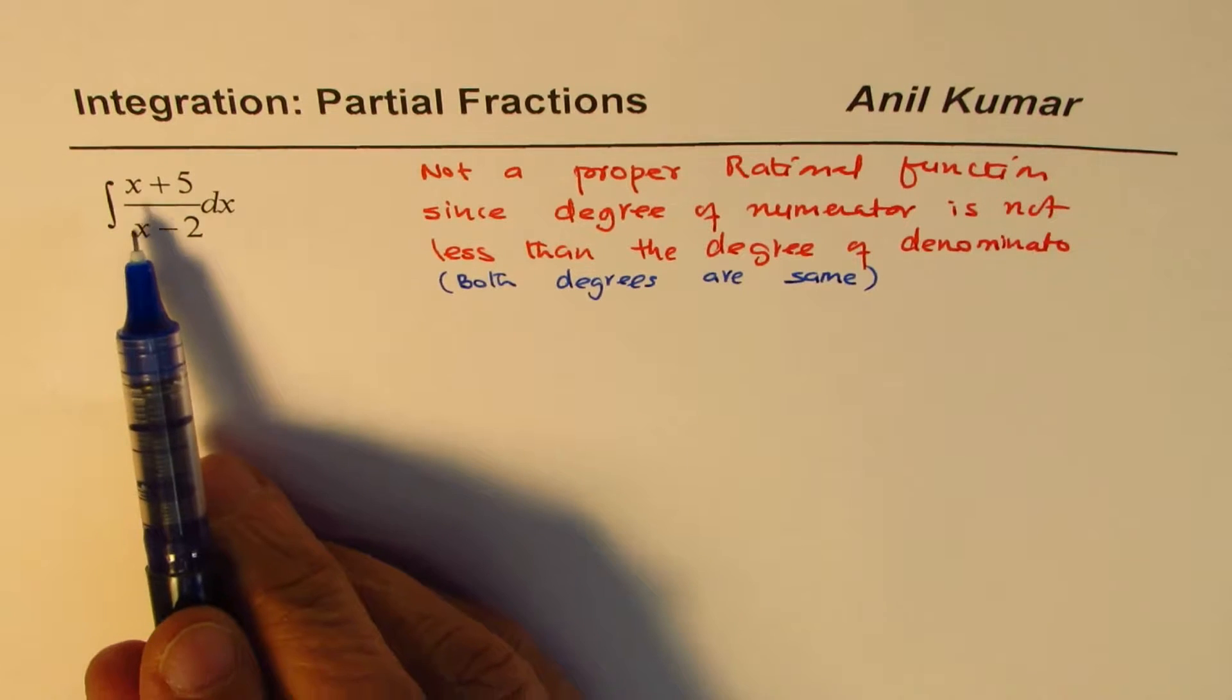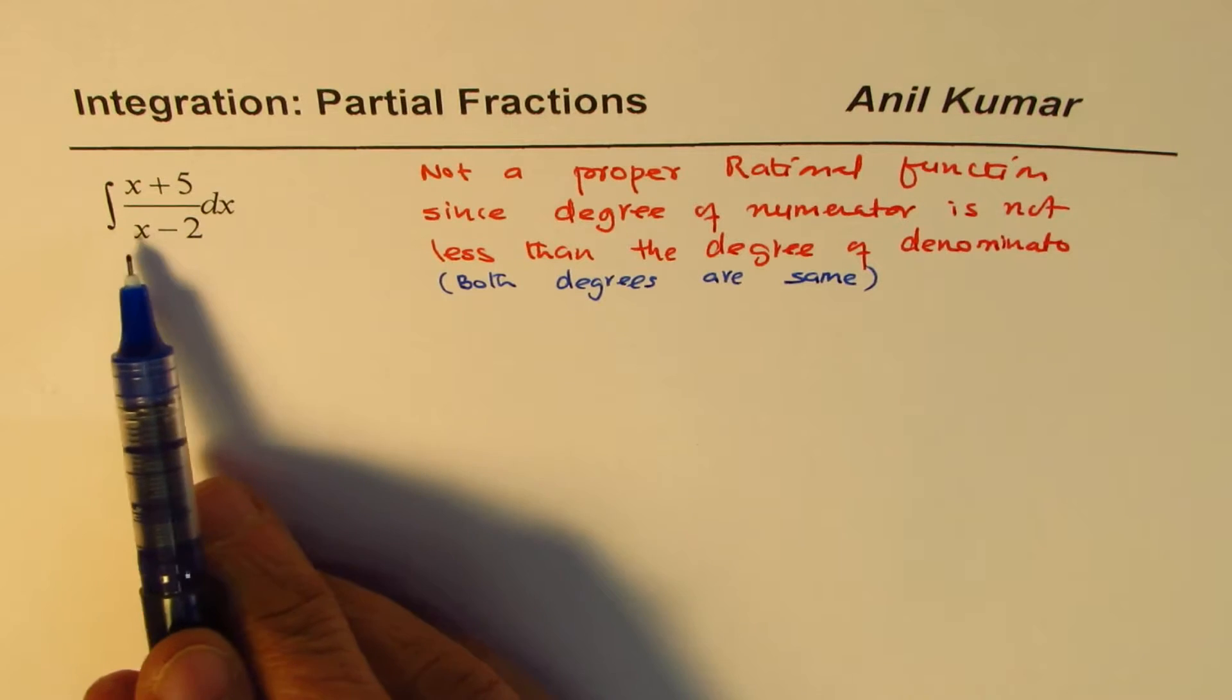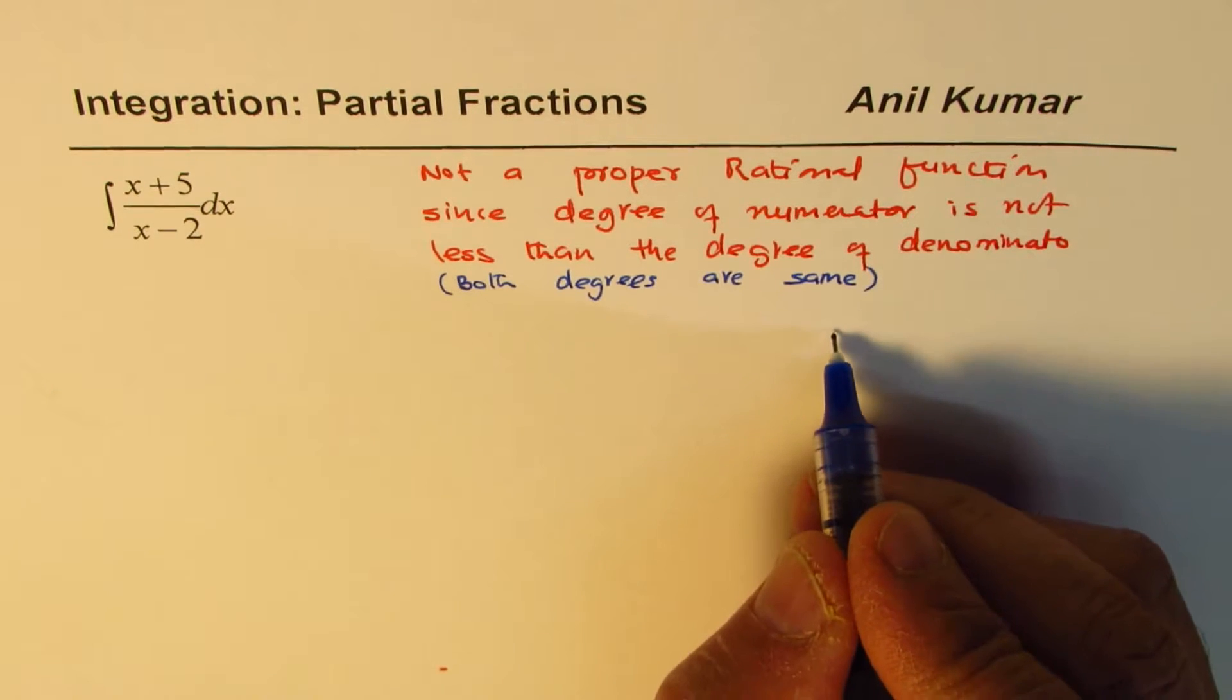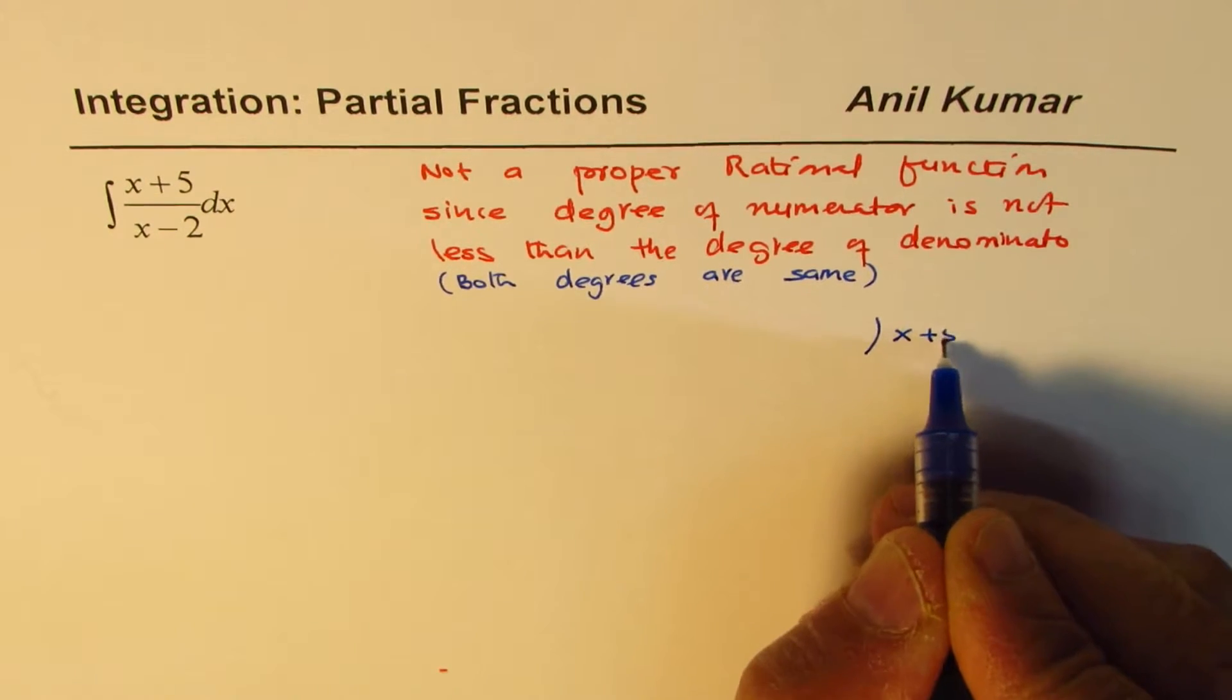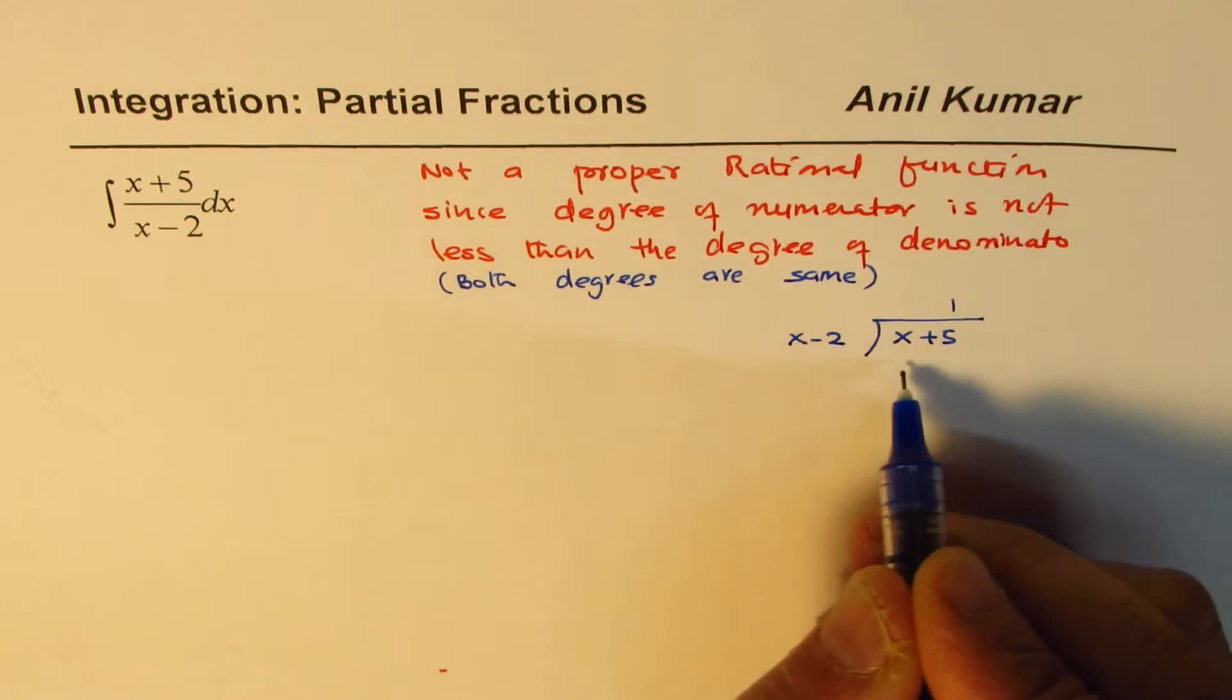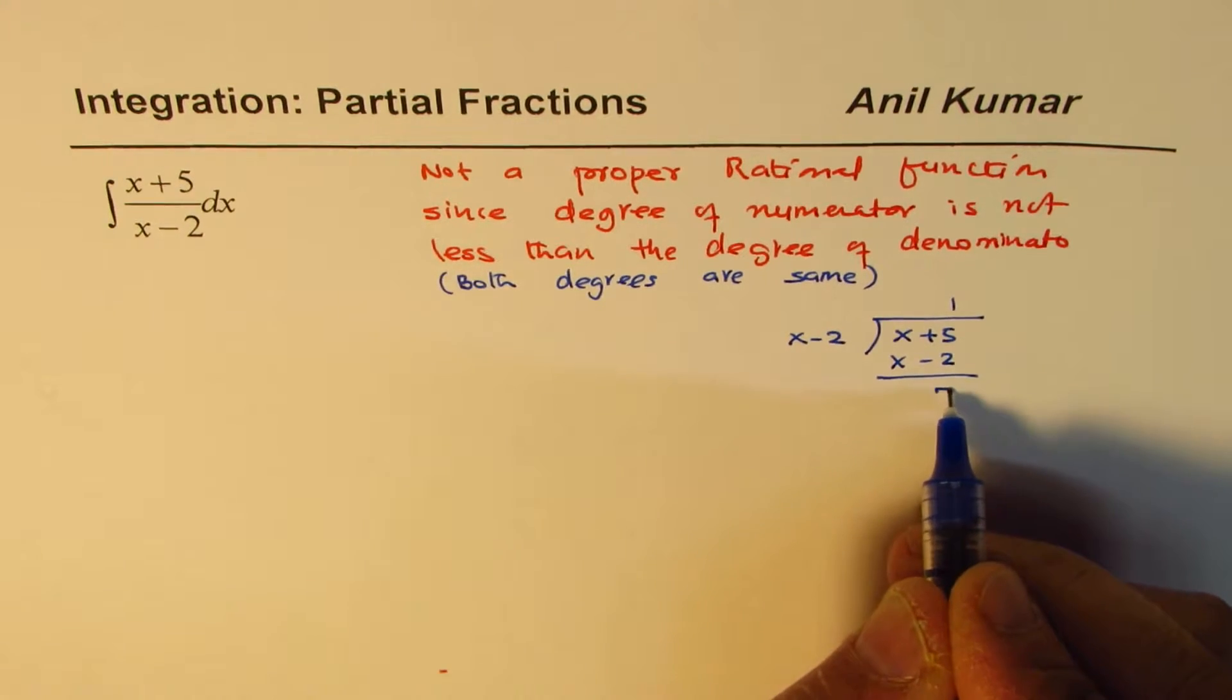Now in such a case, what you can do is you can divide the numerator by the denominator to write it as combination of fractions. So what we will do here is we'll divide the numerator, which is x plus 5, by the denominator, which is x minus 2. So it can go 1 times, so it is x minus 2, and what we get here is 7.